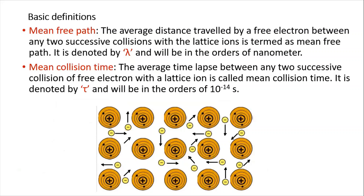In order to understand the classical free electron model, we need to define certain basic terms, especially the mean free path. It is the average distance traveled by a free electron between any two successive collisions with the lattice ions. It is termed as mean free path, denoted by lambda, and will be in the order of nanometers.